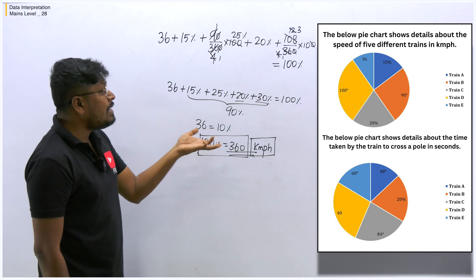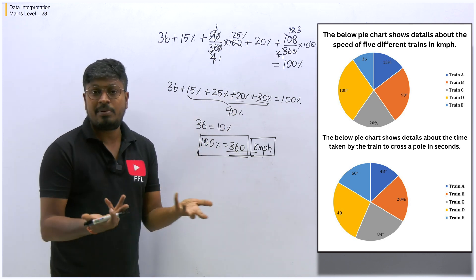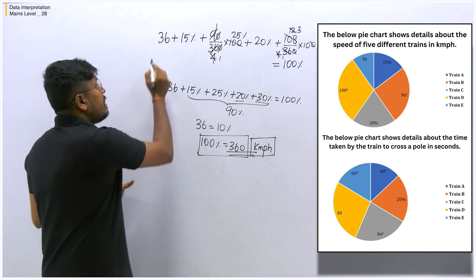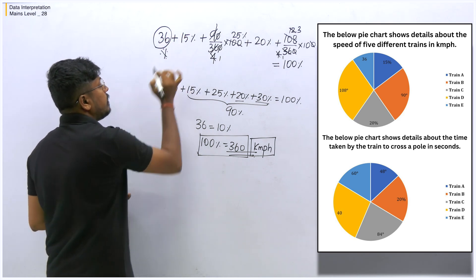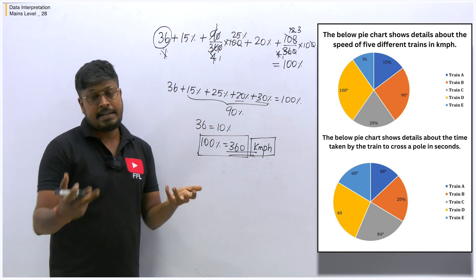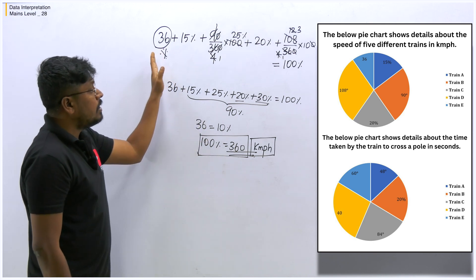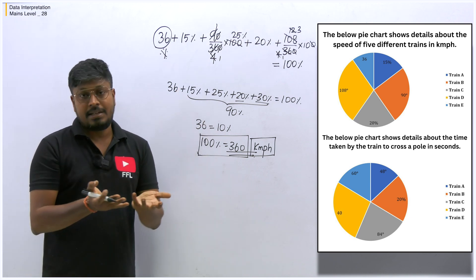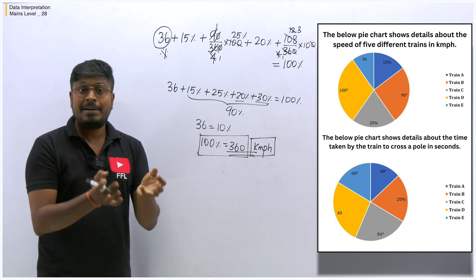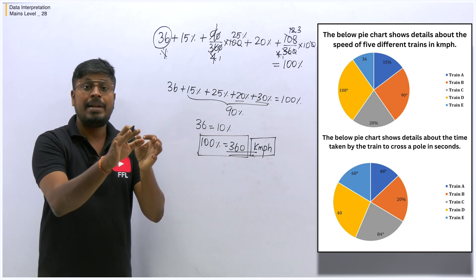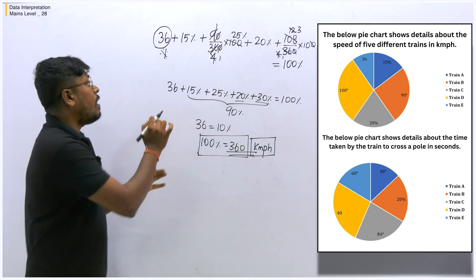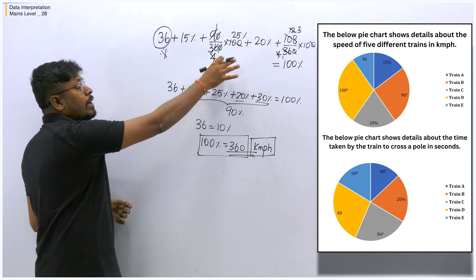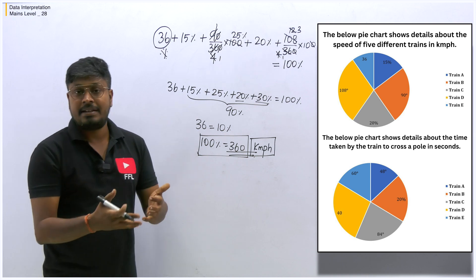Remember: if all values are in percentage only, you can't find the actual numbers unless a note is given. But here in pie chart one, one value is given as a direct number — that is most important. That one direct value lets you find the total. In most tough-level DIs, pie charts may have no direct values, only percentages, degrees, and one integer. If one integer is given, you can equate to 100% or 360 degrees to get the total.